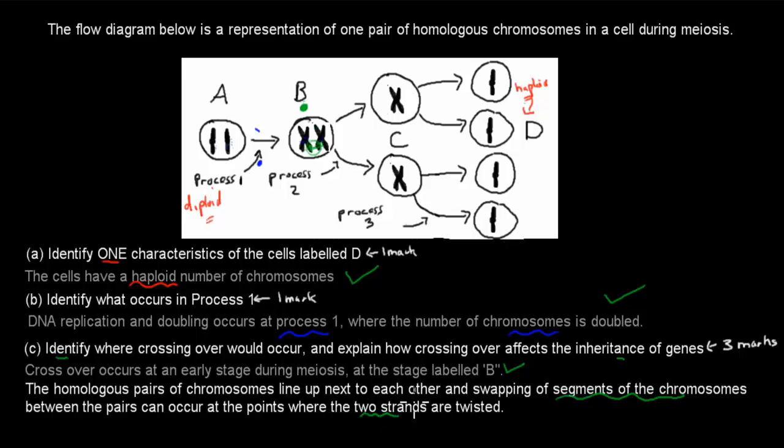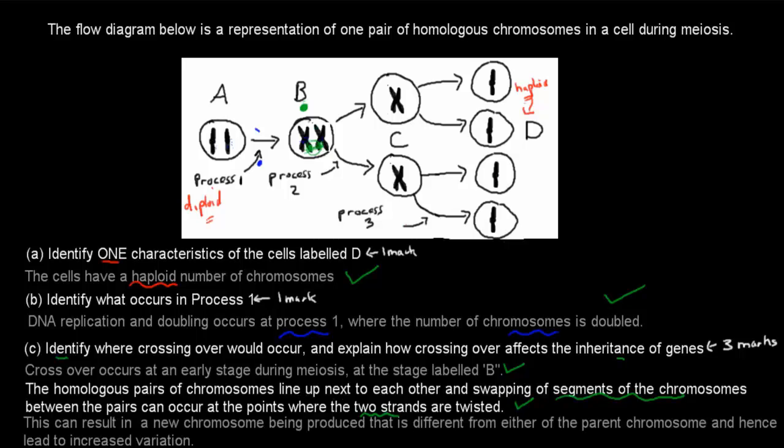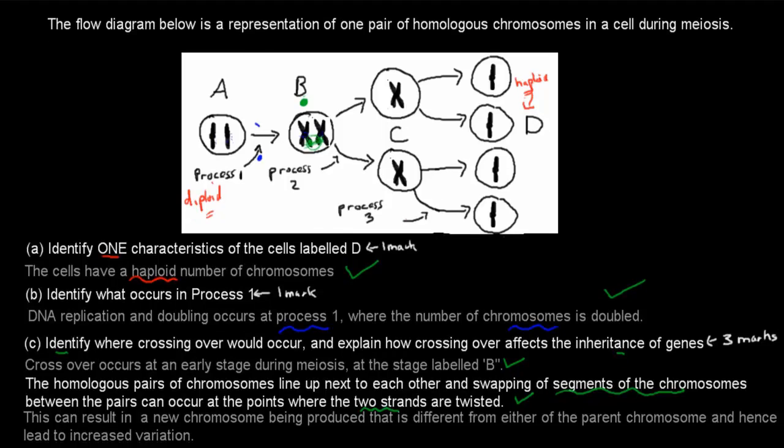So these points where they'll meet and twist around, that's where we have our segments being shared. One moves together, the other moves back. This can result in a new chromosome being produced. It's different from either parent new chromosomes. And hence lead to increased variations. So because we have that swapping over where parts will be different from each other, the actual new chromosome would be a unique combination.